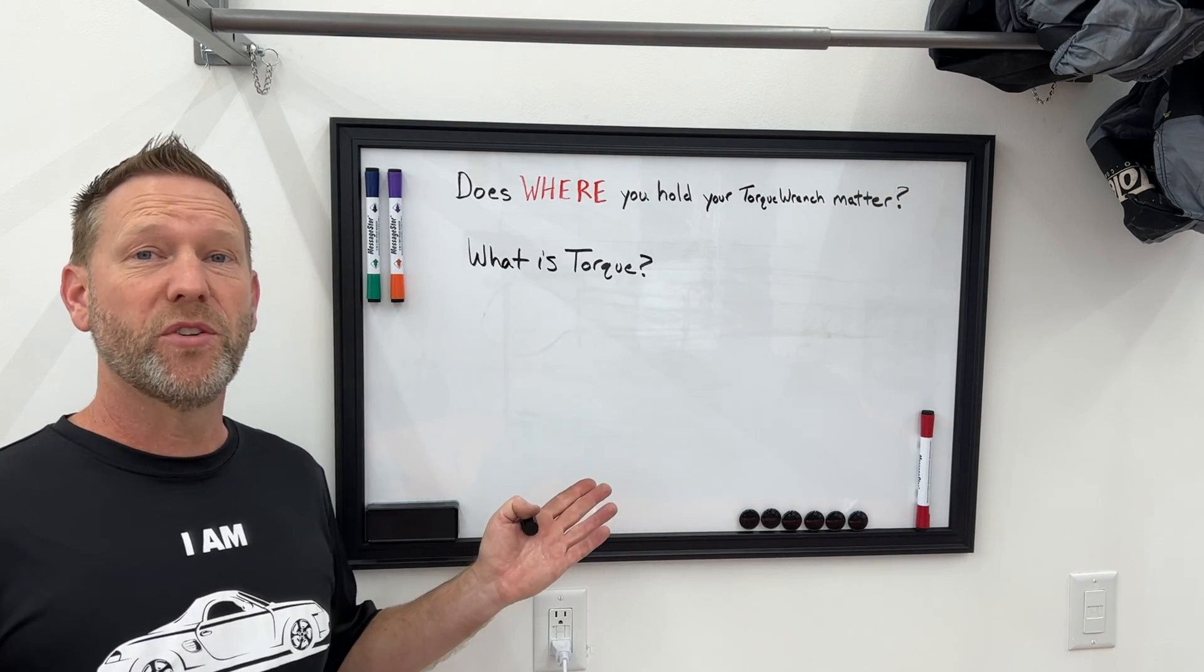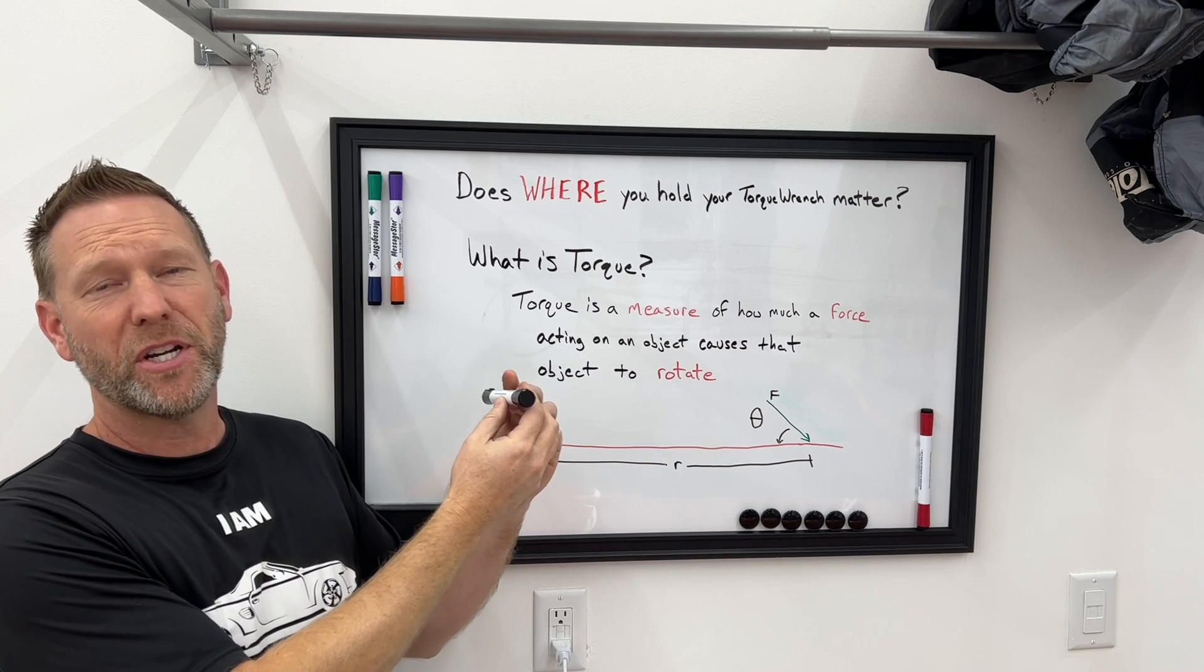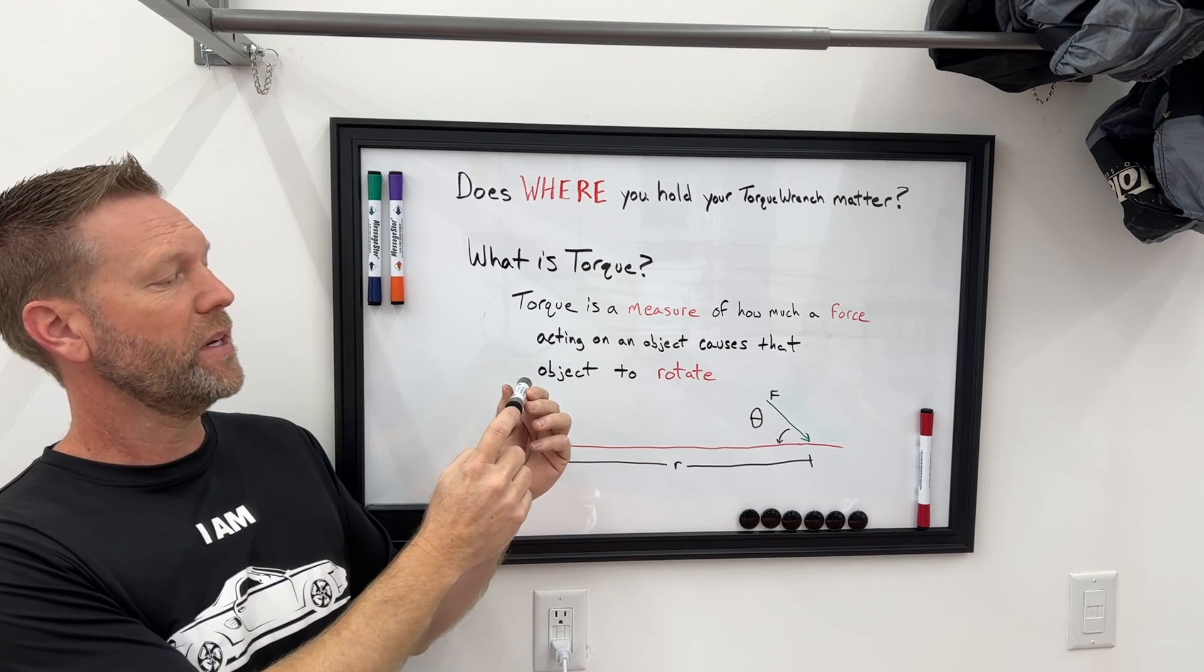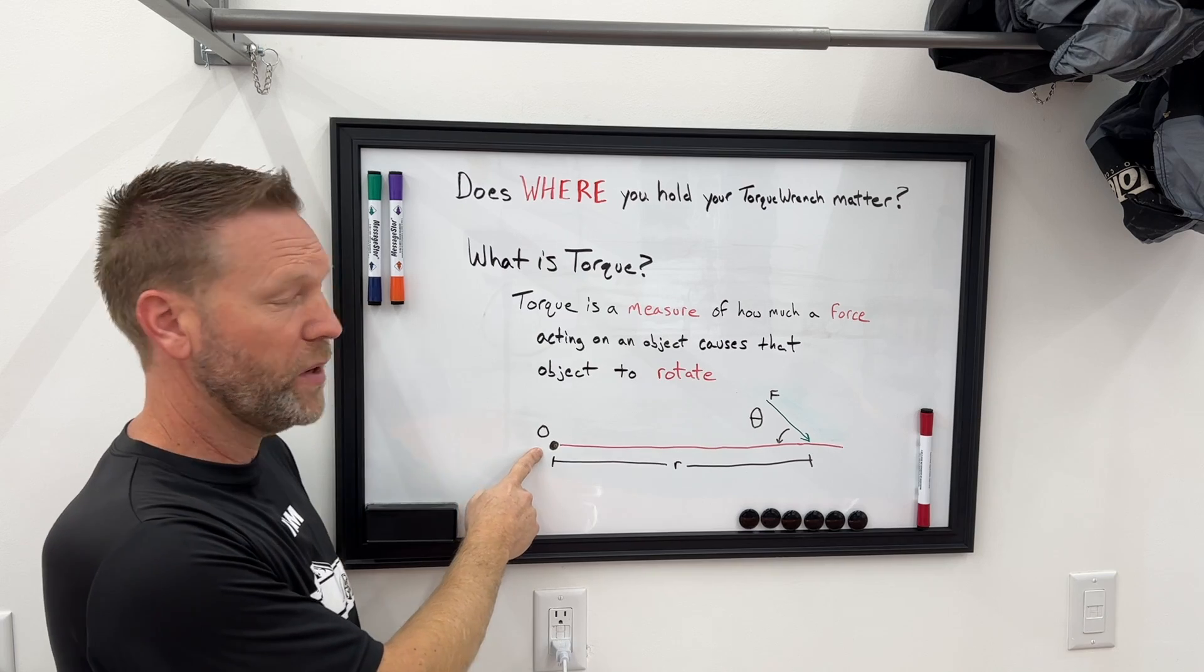Let's start with the basics. What is torque? Torque is a measure of how much a force acting on an object causes that object to rotate. Now an object rotates about an axis, and we're going to call that axis the pivot point, and we're going to label that O here in this diagram.